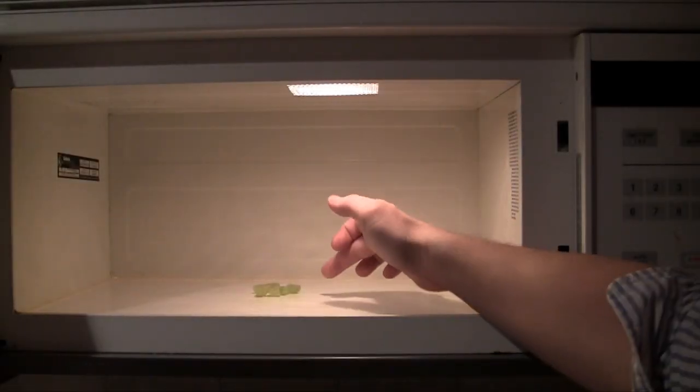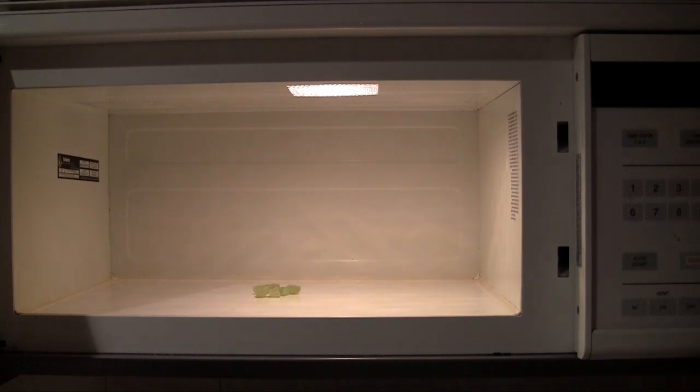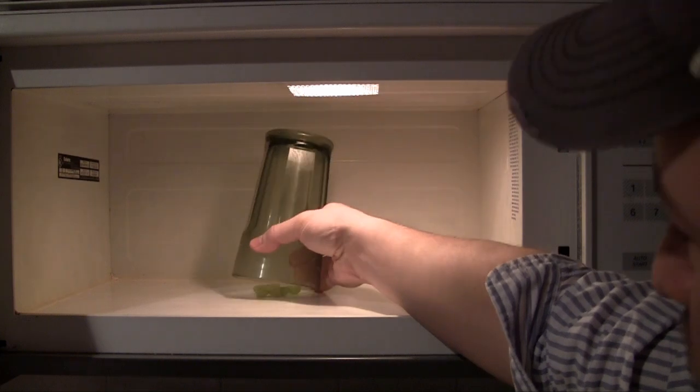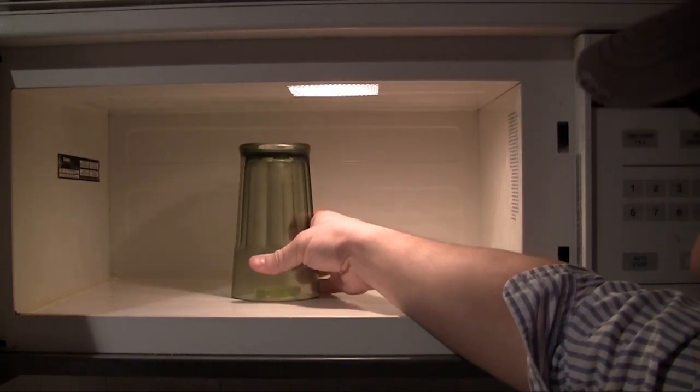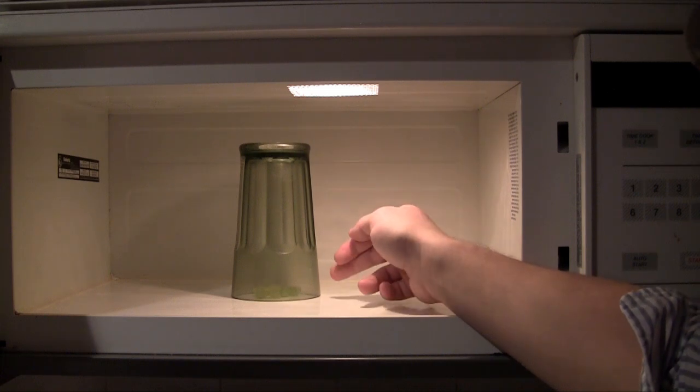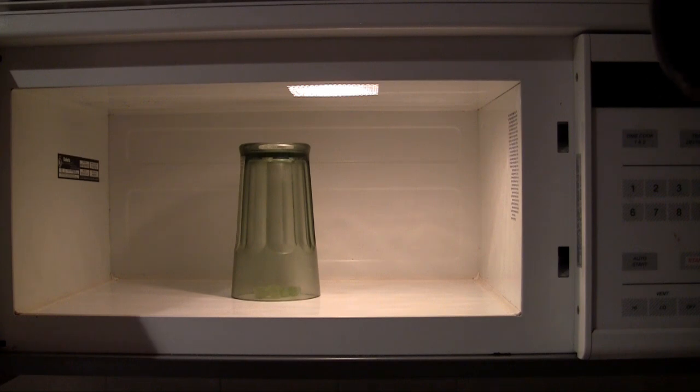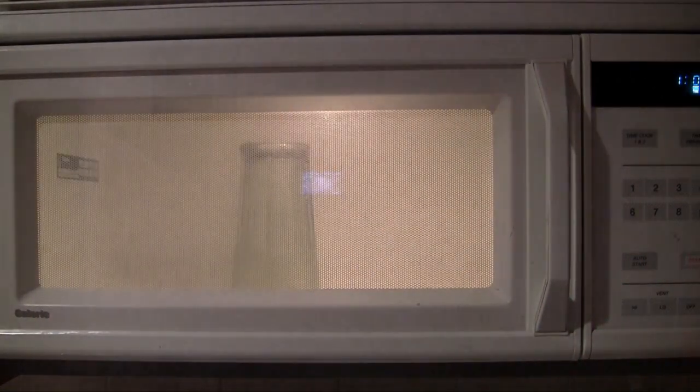So now what I did is I actually took three grapes and put them in there together because, you know, why not. If one was cool, three should be awesome. Now I'm going to go ahead and take that glass and put it right on top kind of like a dome. And I want to make sure that I capture some of the plasma. And it's important not to touch the side of the grapes with your glass. So go ahead and set it up just like that. Now I'll put this on for about a minute and let's see what happens.